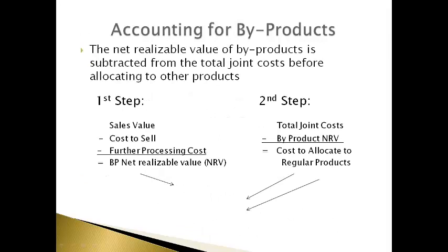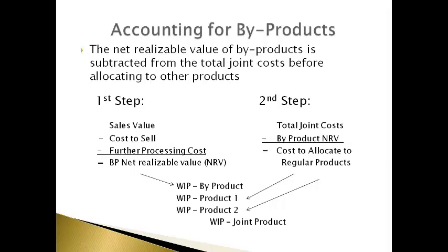Now let's talk about what is done when a company has byproducts from the joint process. The net realizable value of byproducts is subtracted from the total joint cost before allocating to other products. The first step is to compute the net realizable value of the byproducts — the cost to sell and the further processing cost are both subtracted from the sales value. The second step is to subtract the net realizable value of the byproducts from the total joint cost to get the amount of joint costs that will be allocated to the regular products.